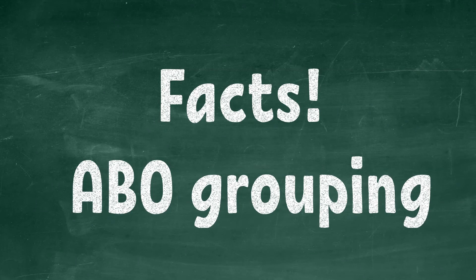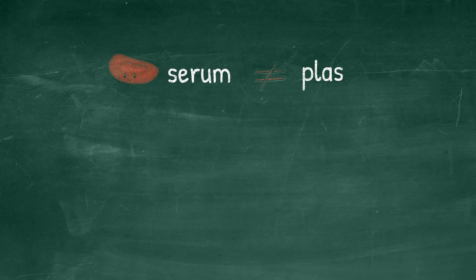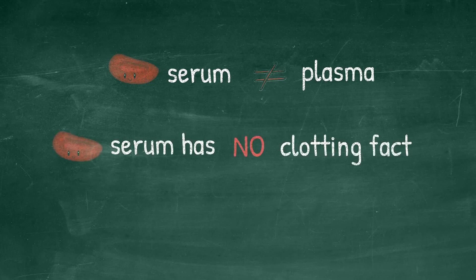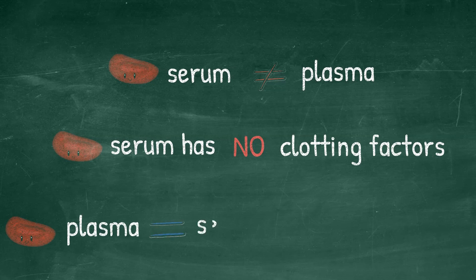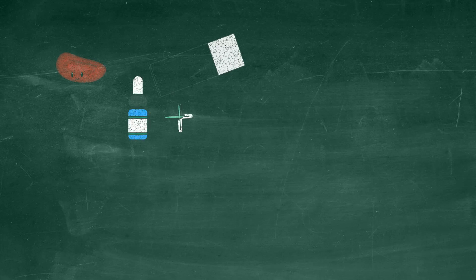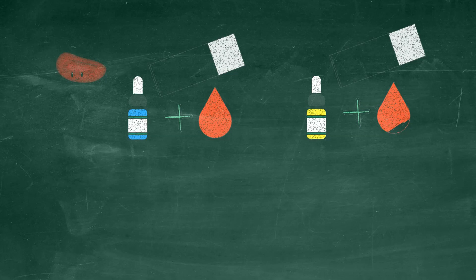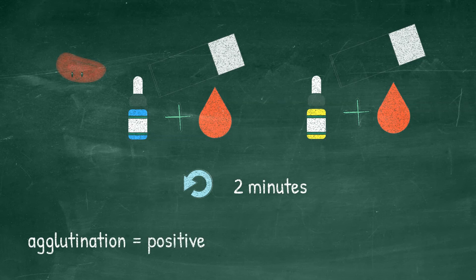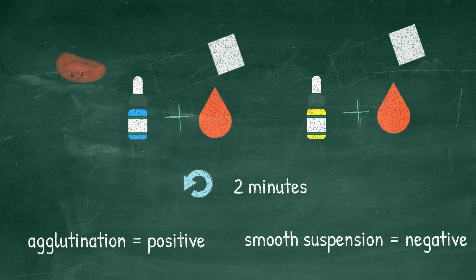Facts that are good to know about ABO grouping: serum and plasma are not the same, but both can be used for blood grouping. Serum has no clotting factors because the blood was allowed to clot before separation — serum plus clotting factors equals plasma. ABO typing can also be performed on a microscope slide. The process is mostly the same, but instead of a tube you use a slide, and instead of centrifuging, you gently tilt the slide in a circular motion for about 2 minutes. If agglutination is observed within 2 minutes it is a positive result; no agglutination — a smooth suspension — is a negative result. Remember, do not place the slide on a heated surface.